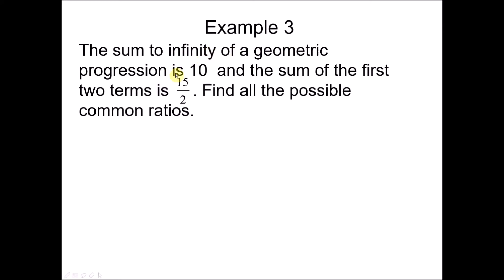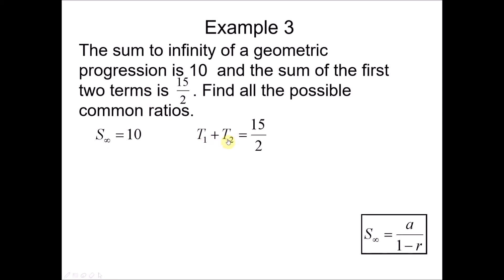Example 3: The sum to infinity of a geometric progression is 10, and the sum of the first two terms is 15/2. Find all possible common ratios. Sum to infinity equals 10, so we use the formula: a / (1 - r) = 10. The sum of the first two terms means the first term plus the second term equals 15/2. We express this in terms of a and r: a + ar = 15/2. Now we have two equations with two unknowns.